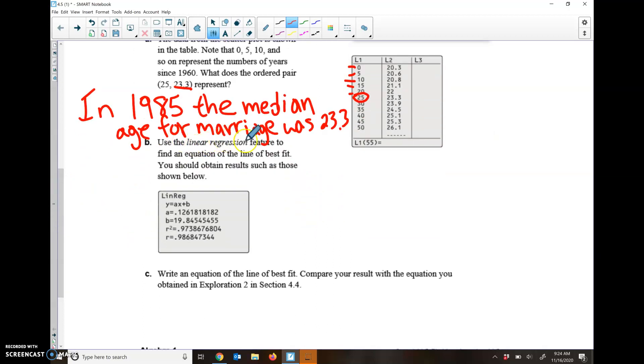Part B says use linear regression feature to find an equation of the line of best fit. Here they already did it for us, so we don't need to put it in our calculator. Y equals, and they gave us A is 0.126, let's just round that to 0.13X, and then they gave us B is 19.8.